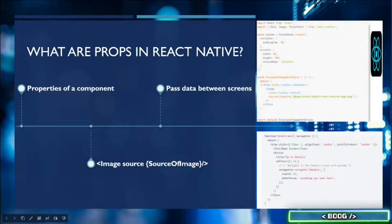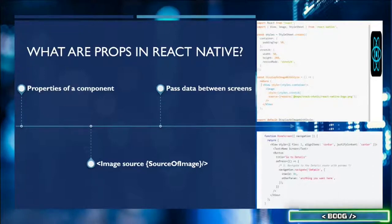What are props in React Native? Most components can be customized when they are created with different parameters. These created parameters are called props, which is short for properties. For example, the React Native image component has a source property. When we use the image, we define the prop called source. Source controls what the image shows — it could be a link or it could be an image saved within the file structure.